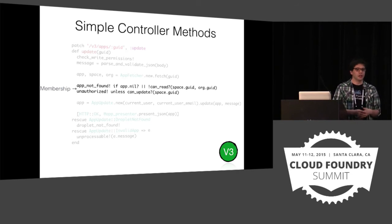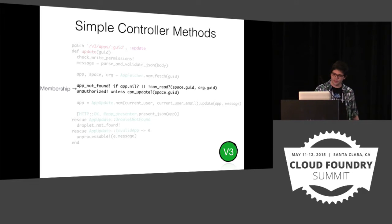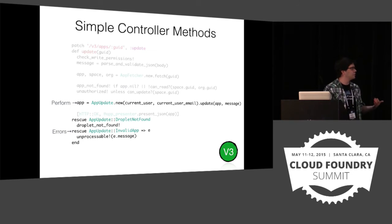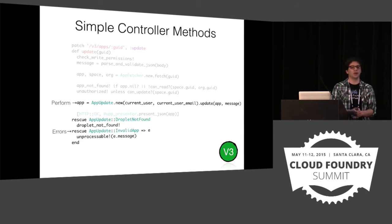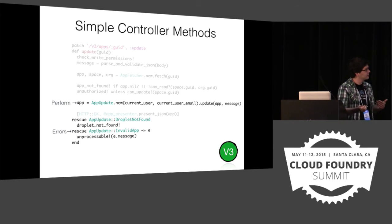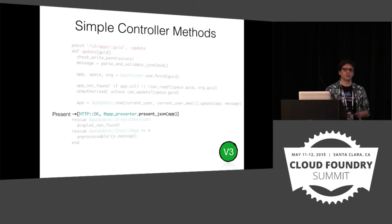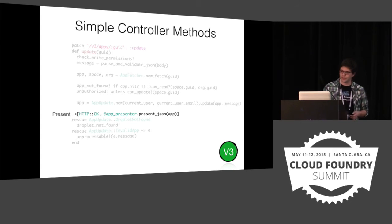Then we do membership checking. In Cloud Foundry, you can be a member of a space in an organization with different roles, and in this case you need the update permission to change this app. If everything is okay, we perform the action. The action object — AppUpdate — is another first-class citizen in V3. We pulled that out because it's an important piece of behavior and it's important that it's easy to test in its own dedicated place. Finally, when everything goes okay, we return a response: 200 OK, and we use a presenter to serialize the app into JSON.